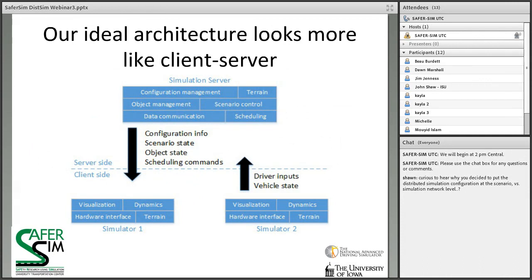We're probably going to move to something where features like HCSM — which does object management and scenario control — move onto a central computer, while other parts like NasDyna for dynamics, hardware interfaces, terrain interaction, and visualization remain on each simulator node. This type of network could be client-server with client-side prediction, or it could still be peer-to-peer — it all depends on whether you let simulator one talk directly to simulator two — so we'd still have that architectural choice to make.